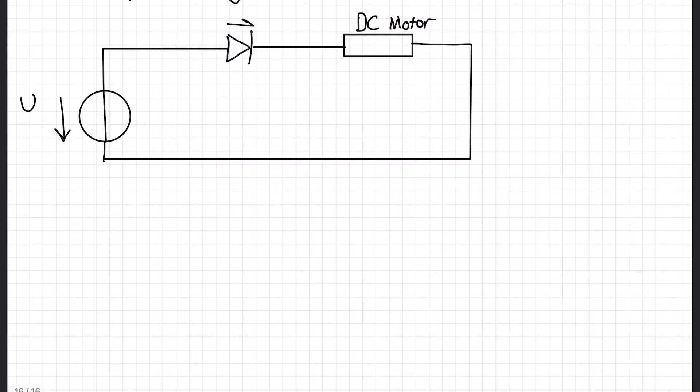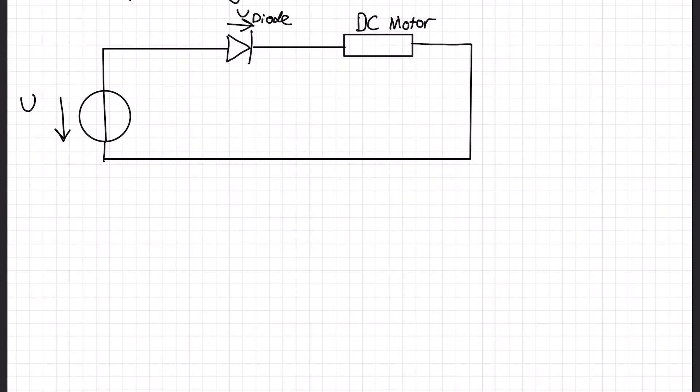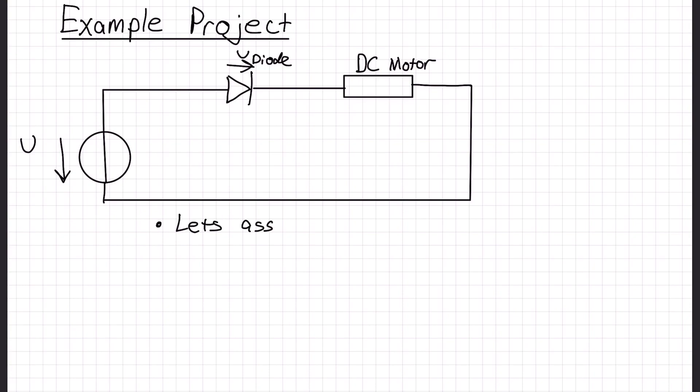So let's build an example project. We have a voltage source, a diode, and I actually wanted to use an LED first, but LED is also some sort of a diode. So I went with a DC motor, which can work in both directions. It will just change the direction of its rotation. We have voltage drop by diode and we have a voltage drop by DC motor. Let's assume our DC motor needs at least 12 volts to work.